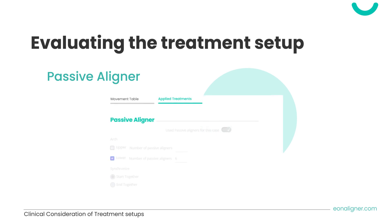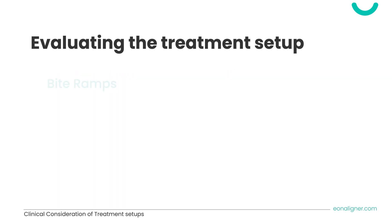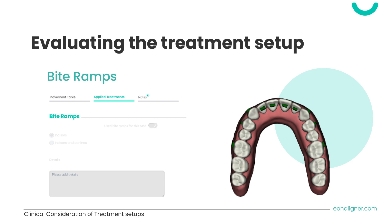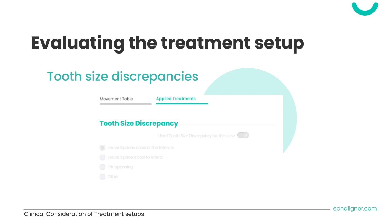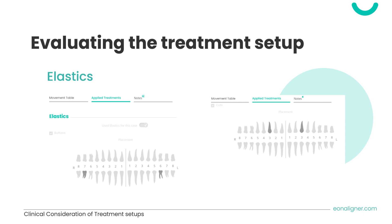Check that any passive aligners requested are applied to the correct arch and properly timed. In some cases, bite ramps are used in deep bite treatment to assist in intrusion of lower anterior teeth — assess their location and confirm lower incisors are in contact to ensure their function. In cases with tooth size discrepancy, verify that the amount of space left is appropriate or that IPR on the opposing arch addresses the discrepancy. For elastics, check that hooks and cutouts are in the right places, attachments are appropriately placed to avoid interferences, and timing is correct.